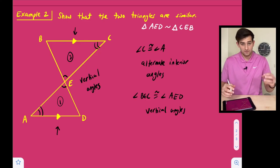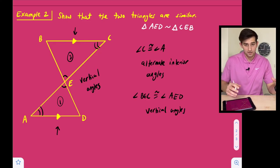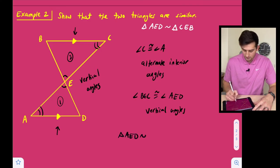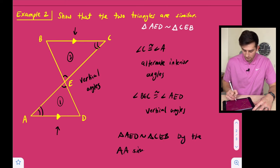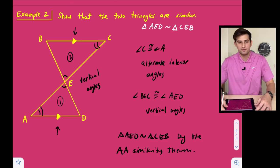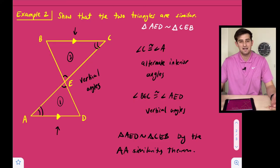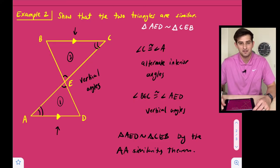Since we have two angles of one triangle that are congruent to two angles of another triangle, we can say triangle AED is similar to triangle CEB by the Angle-Angle Similarity Theorem. We were able to prove that those two triangles were in fact similar. And that's the Angle-Angle Similarity Theorem.